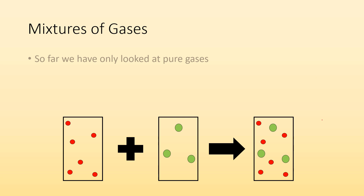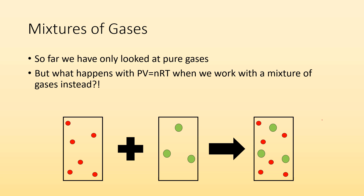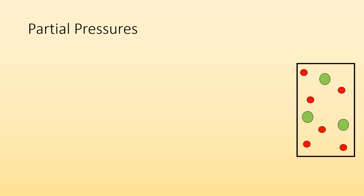So, mixtures of gases. So far, we've only talked about pure gases — PV equals NRT — we've only talked about just one gas being involved. But what happens with the ideal gas law when we work with a mixture of gases instead? Turns out not a whole lot of difference, actually. It's pretty much the same. Nothing drastic is different, but let's talk about what we need to consider.